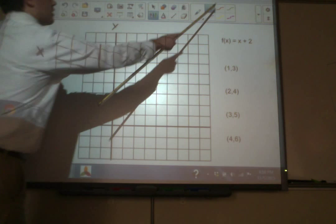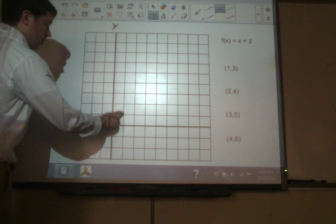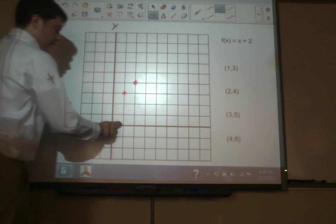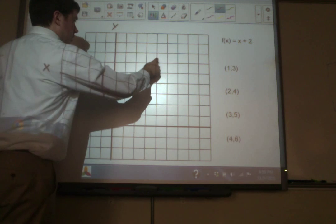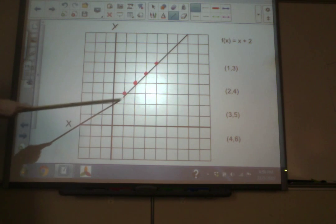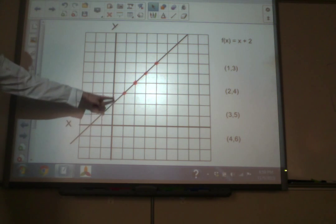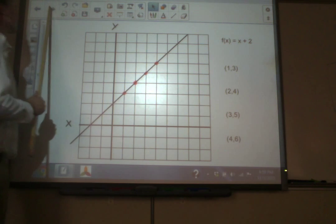Watch what happens as we graph these on a graph. Notice that my origin is right here. I've moved it a little bit. (1,3) is going to be right here. (2,4). 1, 2, 1, 2, 3, 4. Right there. (3,5) is going to be here. And (4,6) is going to be right there. There's our four answers. Do you notice that they make a sort of straight line? That is not a coincidence. This particular function has a pattern. And what this line represents is every single point that this line goes through. You can see there's one here, one here, there, there, all four of those. Every single point that that line hits is going to be a possible answer to our function. Very cool the way that works.